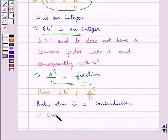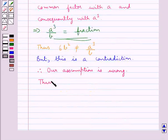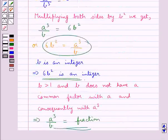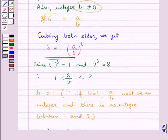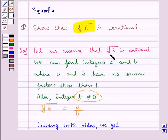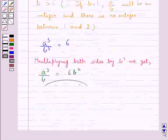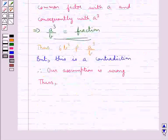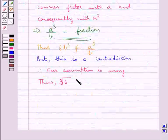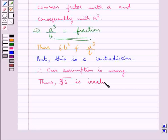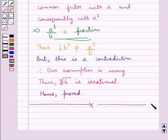Therefore our assumption is wrong. Thus cube root 6 is irrational, since assuming it was rational led to a contradiction. So we finally conclude that cube root 6 is irrational. Hence proved. This completes the session — hope you have understood the solution. Thank you.